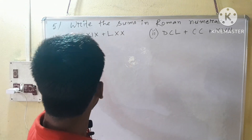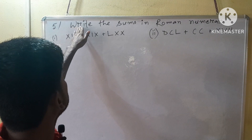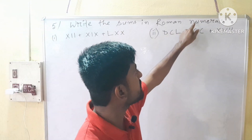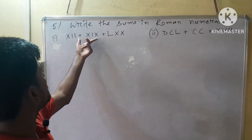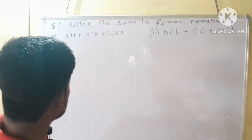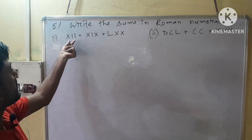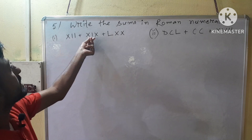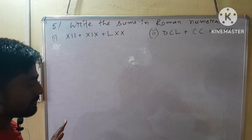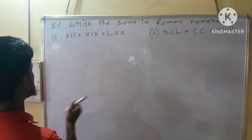Our next question is question number 5. Question number 5 says: write the sums in Roman numerals. That means we have to write these sums into Roman numerals. First we convert the Roman numbers into decimal, then we add the numbers, and then we write the result in Roman numerals.